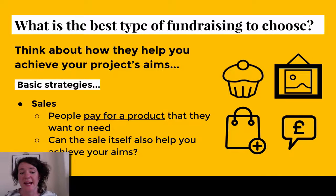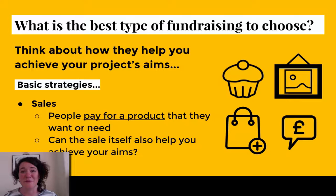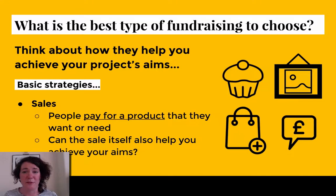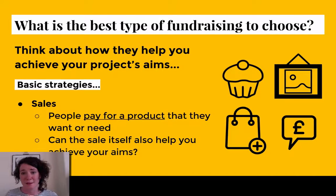Again, think about whether the sale itself can also help you achieve your aims. If you're working on a photography project and selling photographs or prints, that might actually tally your fundraising with the aims of your project. With this type of fundraising, you're getting money in by buying something in — say a tray of doughnuts from a supermarket. Each might cost about 20 pence to buy, and you could sell them for 80 pence, making a 60 pence profit on every doughnut. All that profit goes into your fundraising — a simple and straightforward way to gather enough to start your project fund.